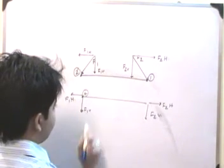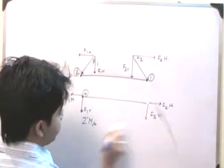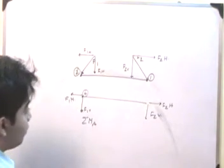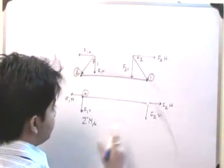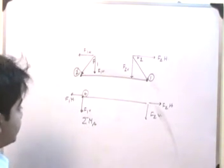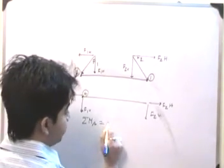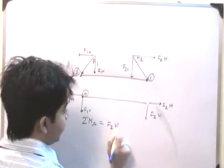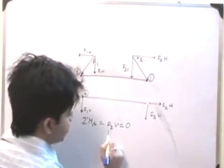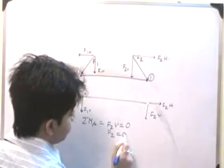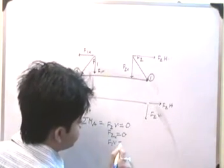Now if we take summation of moment about A, and if this is in equilibrium, then what we have essentially is F1H times distance. F2H will not have any moment because it passes through the node. So it will be essentially F2V times the distance. Summation of MA must be equal to zero as it is in equilibrium. So essentially from here, F2V is equal to zero, which means that F1V must be equal to zero.